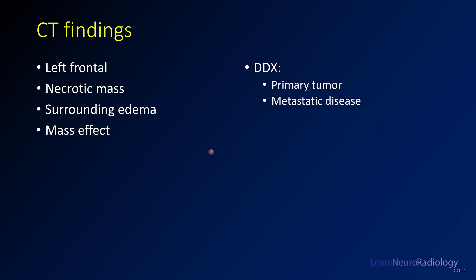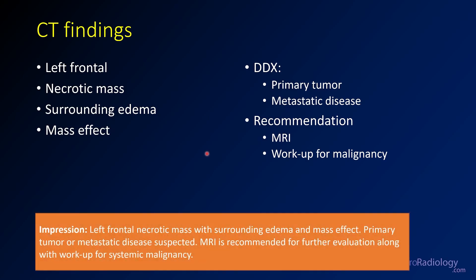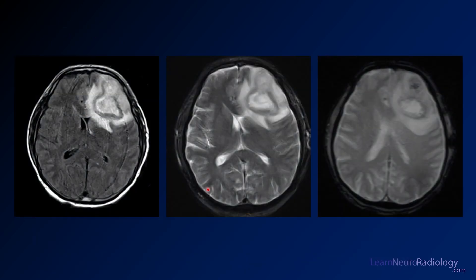Our differential includes primary tumors and metastatic disease. We want to get an MRI and work this up for malignancy. There's a left frontal necrotic mass — primary tumor or metastatic disease suspected — get an MRI. We're also going to consider a workup for systemic malignancy, because this could be a met.